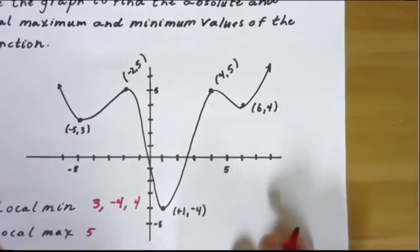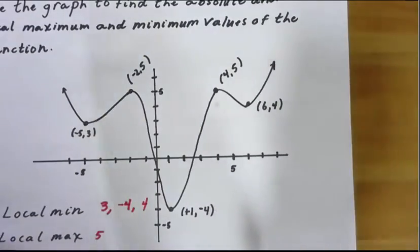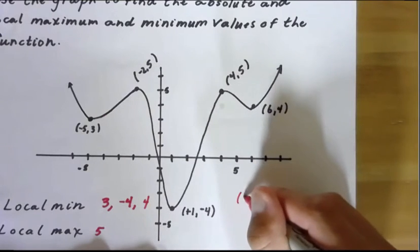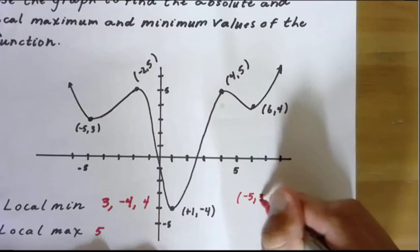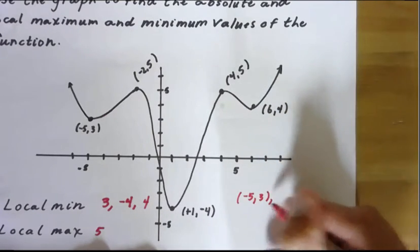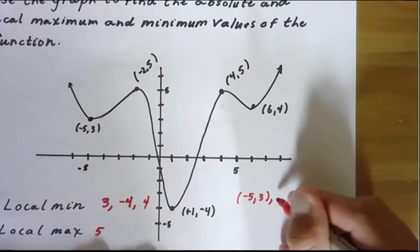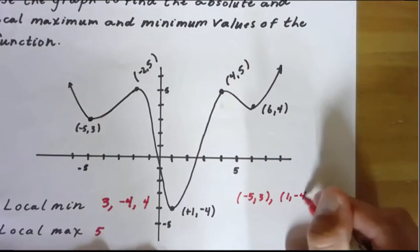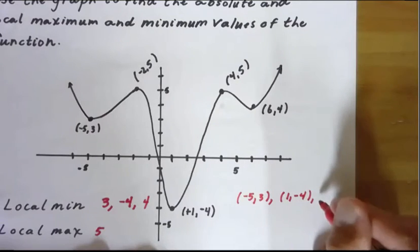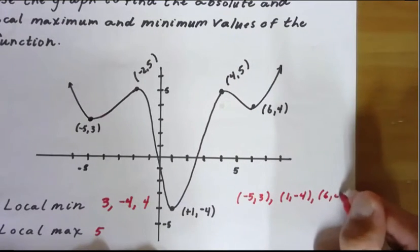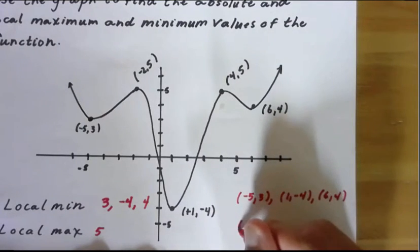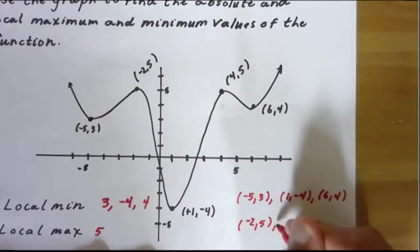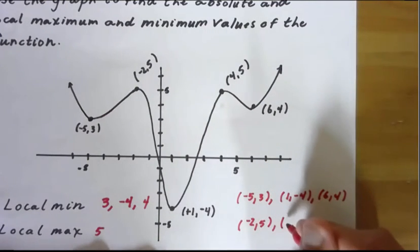If you wanted to list them out as ordered pairs, the local mins would be: negative 5, 3 — then at negative 4 we'd have 1, negative 4 — then we'd have 6, 4. For our local maxes we could list both points. Even though they have the same y value, we'd have negative 2, 5 and then 4, 5.